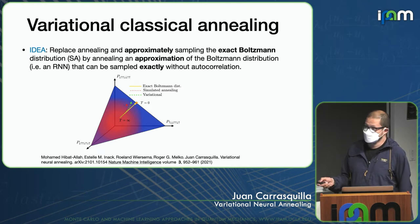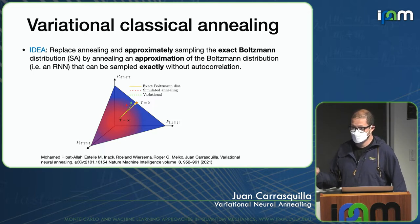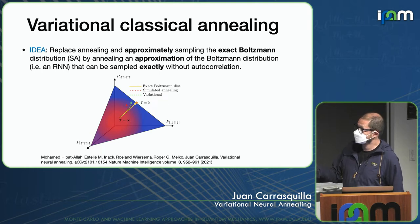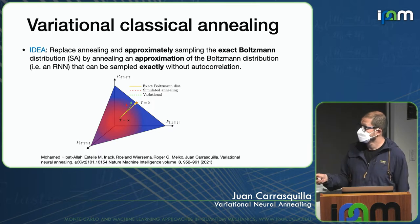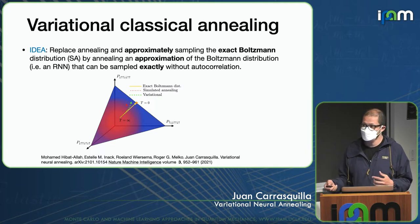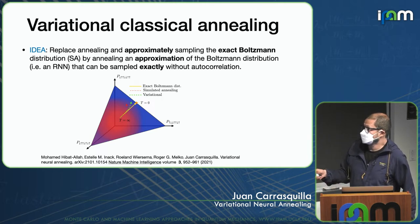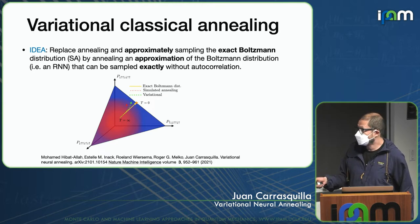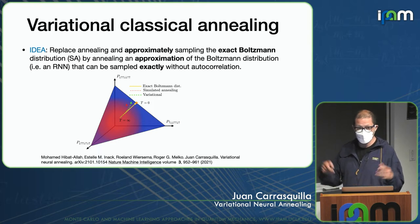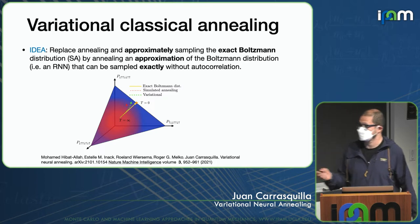For the classical version, the idea is to replace sampling the exact Boltzmann distribution — which is what you target in simulated annealing — with an approximation of the Boltzmann distribution in terms of a machine learning model. This model is chosen such that it can be sampled exactly, with no autocorrelation effects. It targets the Boltzmann distribution as we anneal but is not exact — it's an approximation that can be sampled efficiently and provably efficiently.